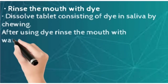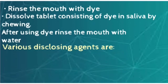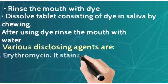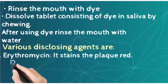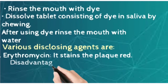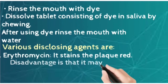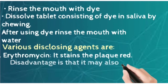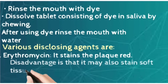Now let us talk about various disclosing agents. The first is erythrosine. It is going to stain the plaque red in color. The disadvantage is that it may also stain some soft tissues.